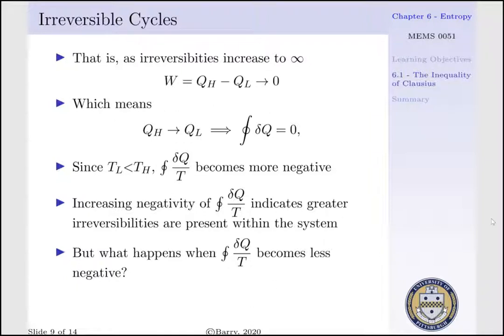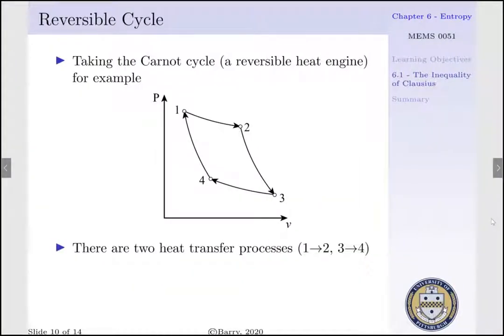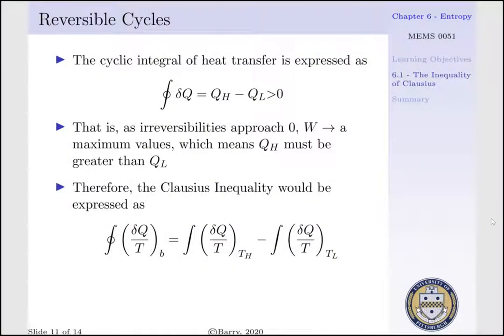Now we consider a situation where the cyclic integral of delta Q per T becomes less negative, by visiting the Carnot cycle — a reversible heat engine. For the Carnot cycle, we have two heat transfer processes: an isothermal heat addition from state 1 to state 2, and an isothermal heat rejection from state 3 to state 4. The cyclic integral of heat transfer is QH minus QL, which must be greater than zero. As irreversibilities approach zero, work approaches a maximum, meaning QH must always be greater than QL. The Clausius inequality becomes: the cyclic integral of delta Q per T equals QH per TH minus QL per TL.